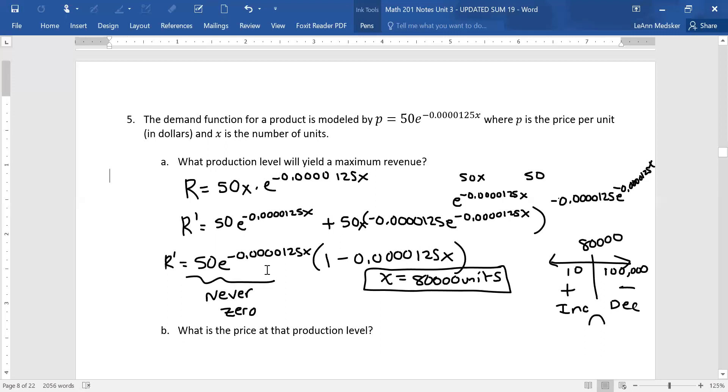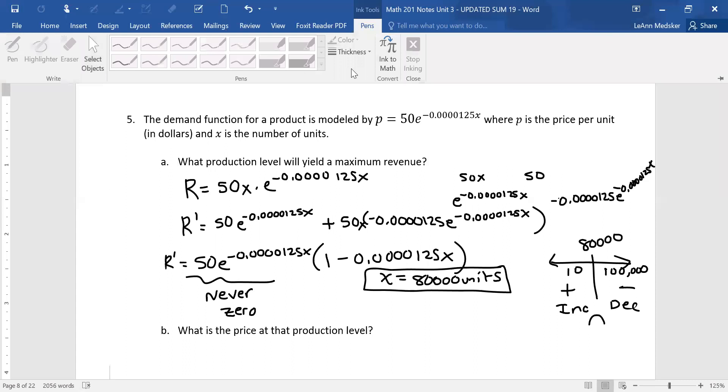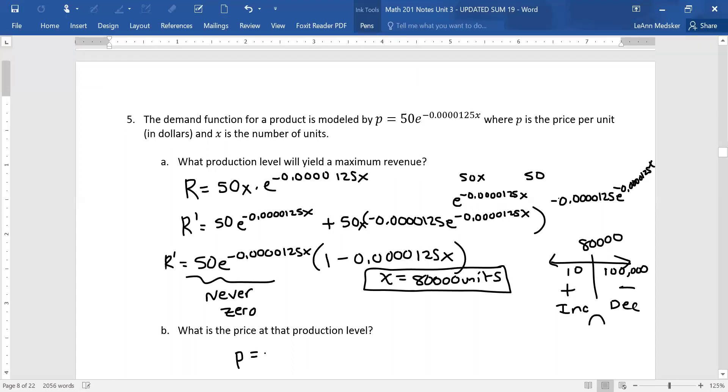Okay, so that is our number of units. The price at the production level has to do with the P formula, the little P that they gave us at the very beginning. So we need to plug in 80,000 units for that. So little P equals 50 times E to the negative 0.0000125 times 80,000. And when I work this all the way out, I get that this comes out to a price of $18.39 per unit. So there's my price per unit.